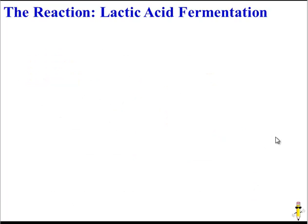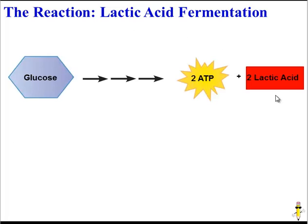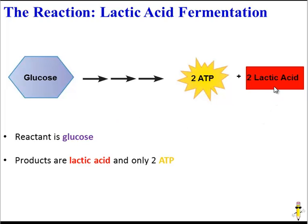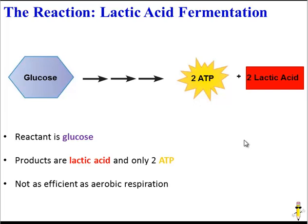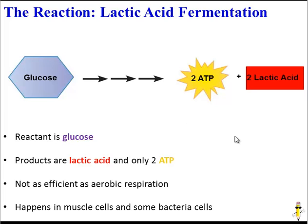There are two types of fermentation. The first is called lactic acid fermentation, and it's pretty simple. There's one reactant, glucose, and two products: lactic acid, a waste product, and ATP. Note that only two ATP molecules are produced, so it's not nearly as efficient. This process is important in your lives because it happens in your muscle cells, and also in the bacterial cells that produce cheese and yogurt through lactic acid fermentation.